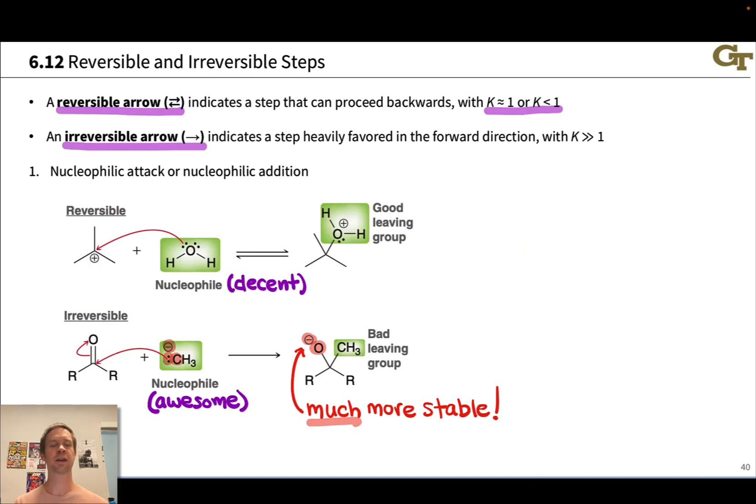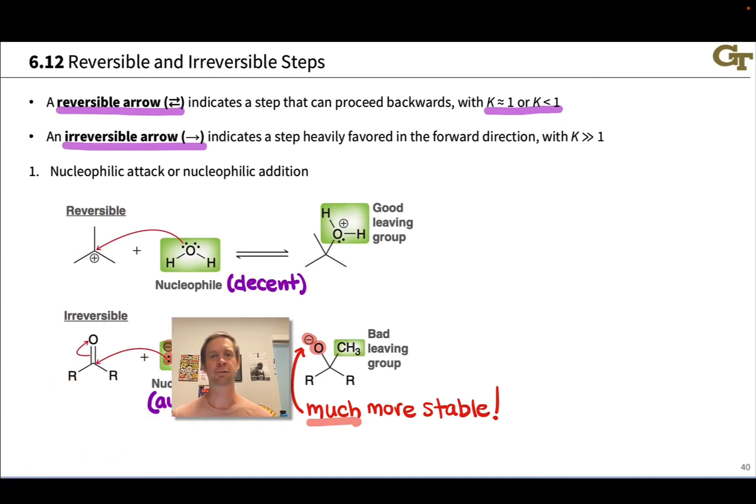In the context of particular reactions, you'll learn how stability trends specifically apply to that particular reaction. This particular one, you will see in organic chemistry too, and there the stability difference between a carbanion and an oxyanion is hugely important to whether these kinds of additions are reversible or, as in this case, irreversible.